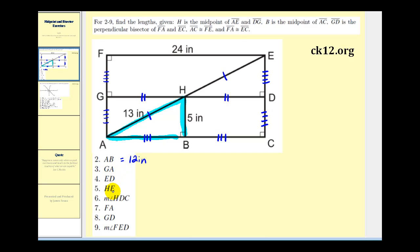Next question is, determine the length of GA. GA is this segment here but GA is congruent with HB so GA would be five inches.